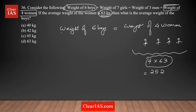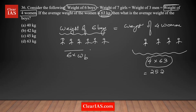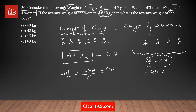Similarly, we apply the same concept to the six boys. Let the average weight of a boy be W_b. The total weight of six boys is 6 multiplied by W_b, and this is equivalent to the weight of four women, which is 252 kg. Solving: W_b equals 252 divided by 6, which gives 42 kilograms.